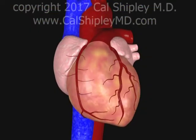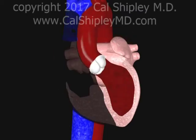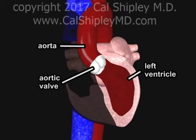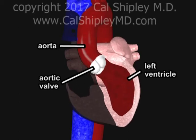Among the chambers of the heart, the left ventricle does the lion's share of the work, pumping freshly oxygenated blood via the aortic valve into the aorta. From the aorta, blood flows to all bodily tissues and organs.